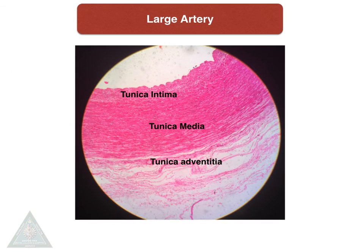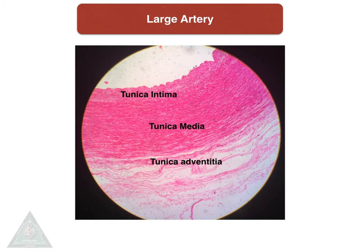This is a microscopic picture of a large artery showing tunica intima and tunica media. You can see many layers made up of elastic fibers mixed with smooth muscle fibers, and tunica adventitia showing nerve fibers — that is, the sympathetic nerve endings and the vasa vasorum.